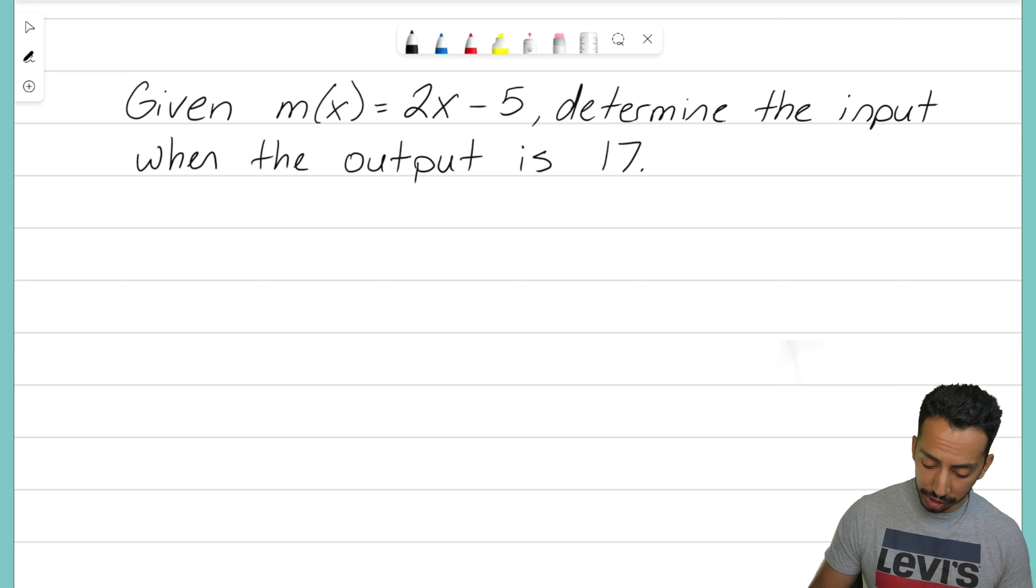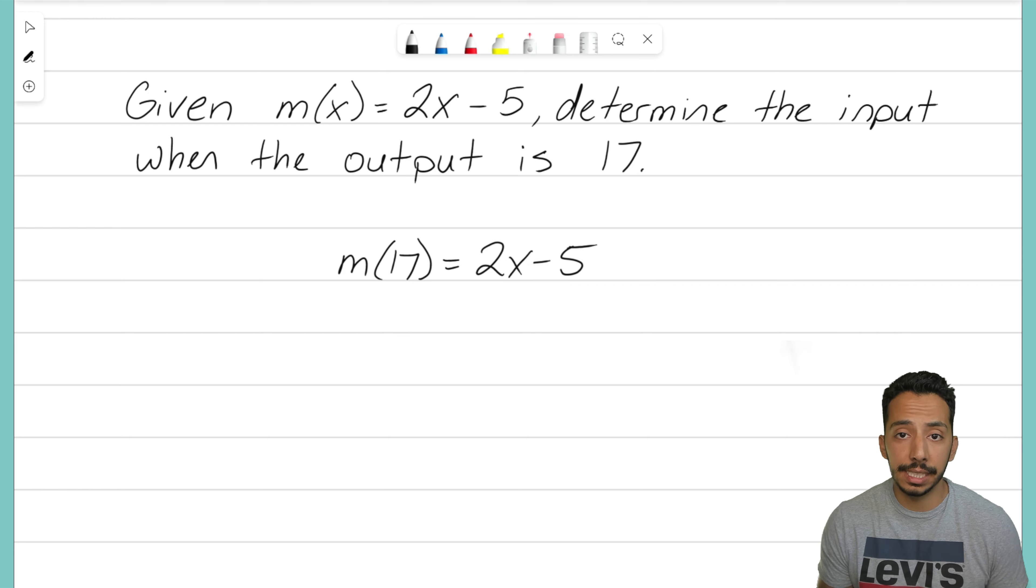So what we'll do is we'll take our function m(x) and we know that m(x) equals 2x minus 5, but in this case we are not going to change the x value here to be a 17. This is the wrong way to do this problem because that's saying our input is 17 and we're going to figure out what the output is.